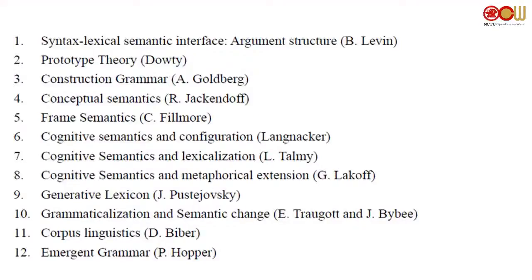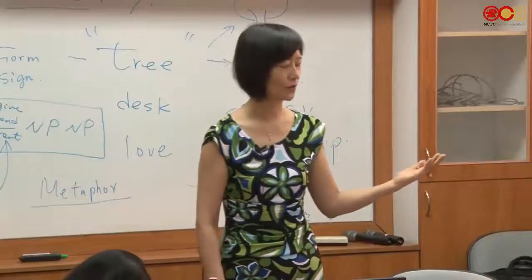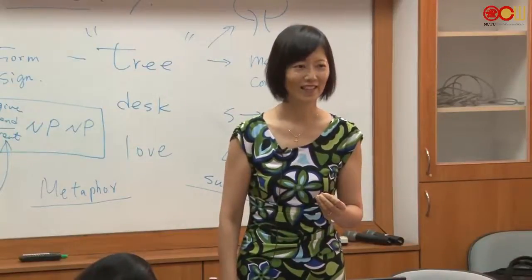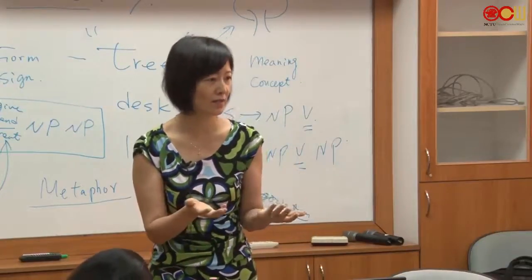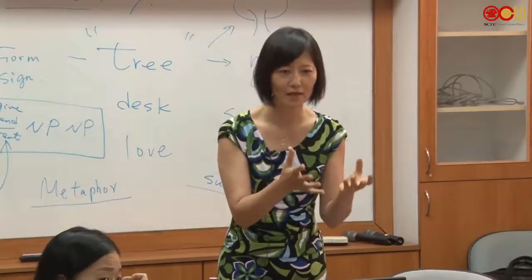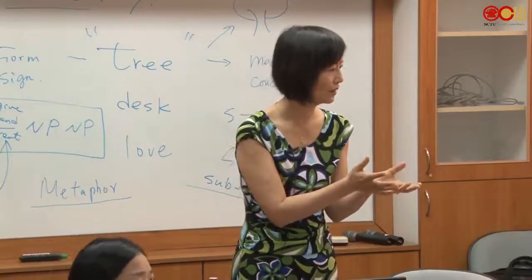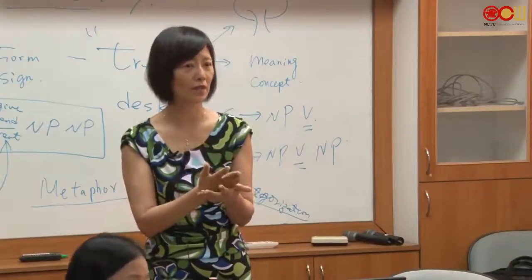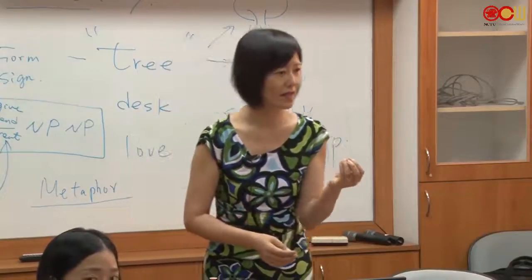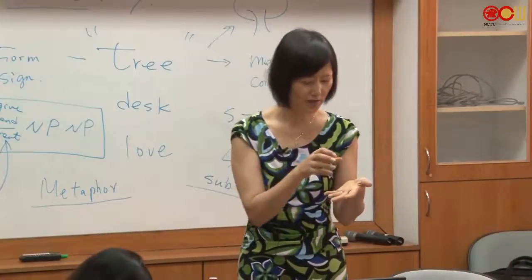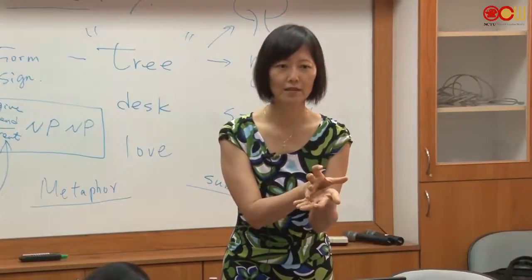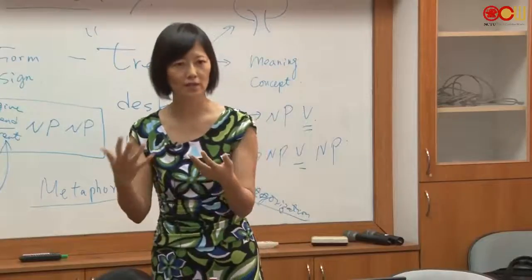Approach twelve is emergent grammar. Grammar is not fixed — grammar is dynamically changing. This is a radical linguistic view. If language is not dynamically being shaped, how would language change? Grammaticalization and emergent grammar describe the mechanism and point of change. Because grammar is changing, lexical semantics is also changing.